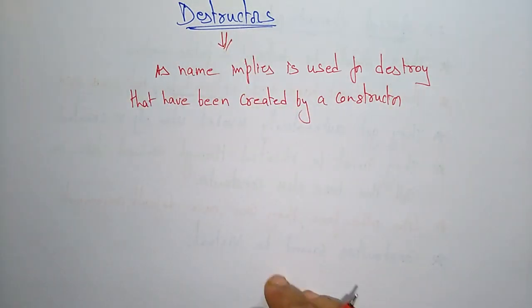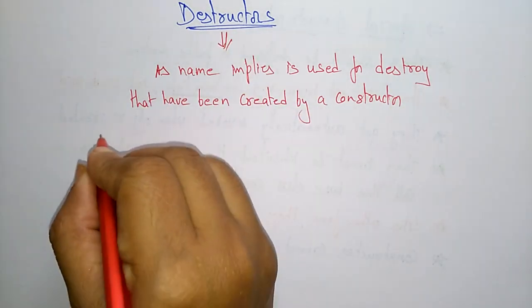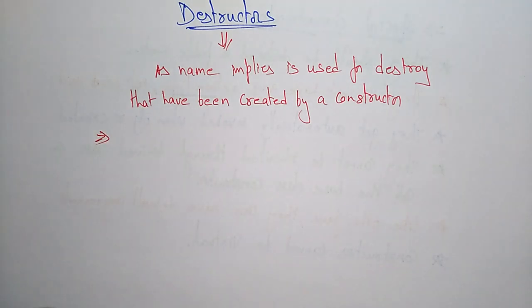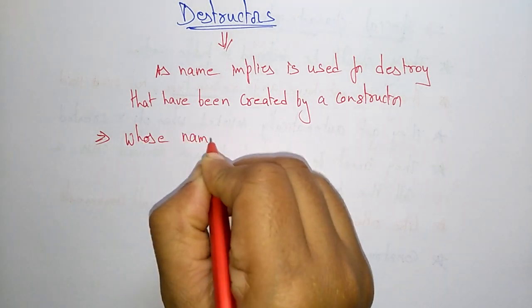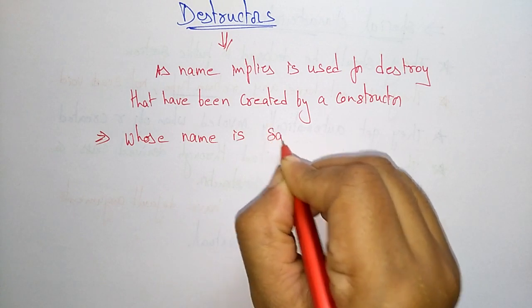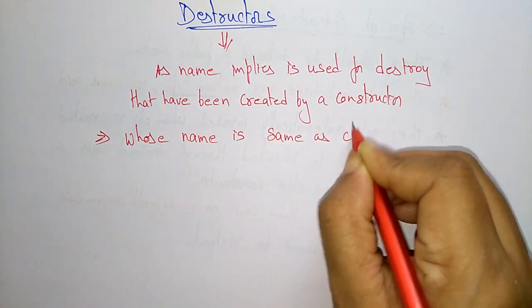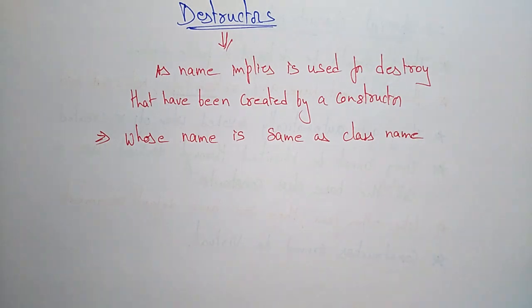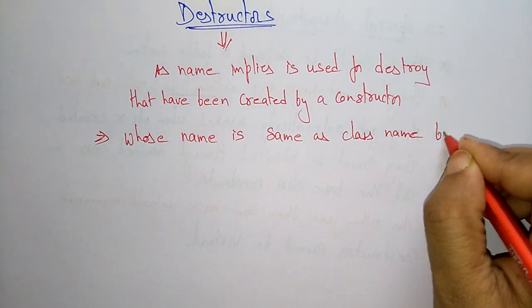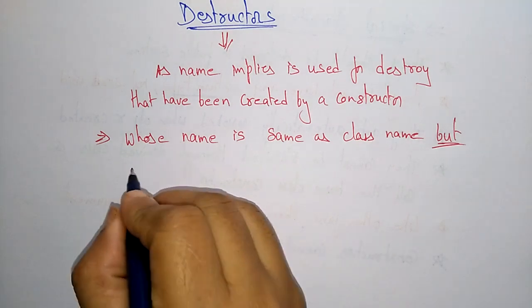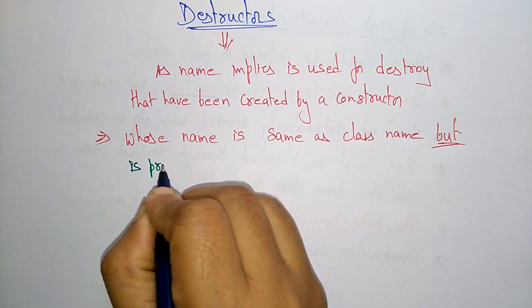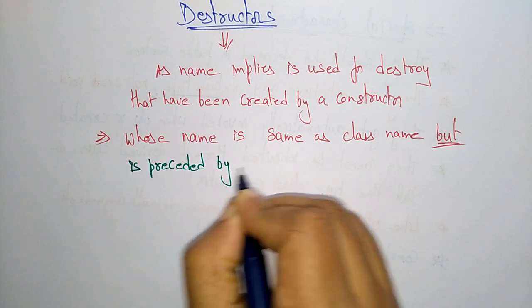Just like constructors, the destructor is also a special member function whose name is same as the class name. But one thing you have to be written here, the difference is whose name is same as the class name but is preceded by a tilde.